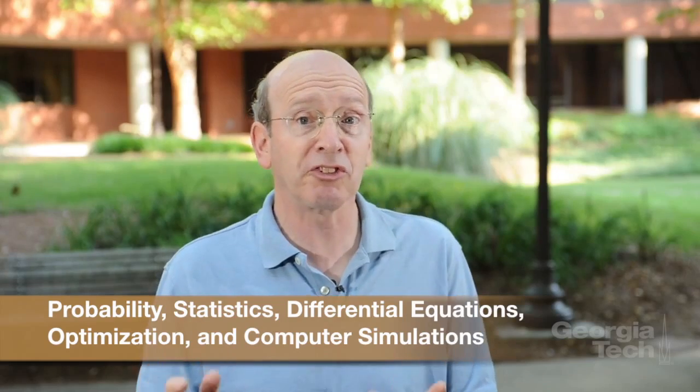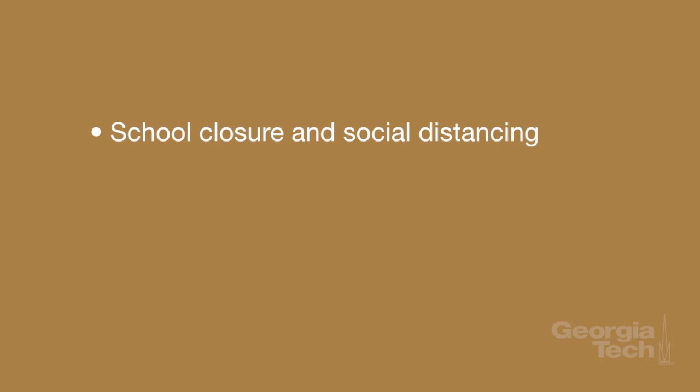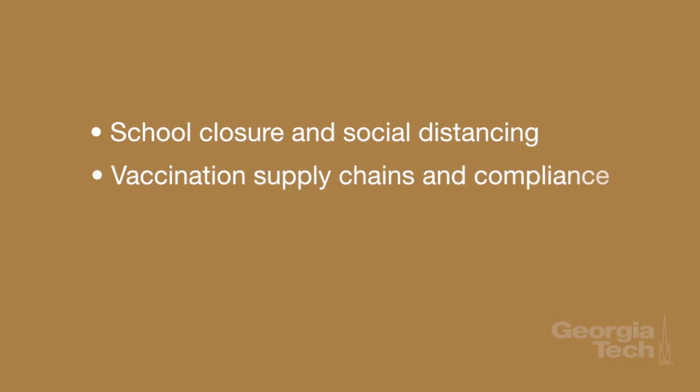So what can be done to stem the march of a pandemic disease through the population? ISyE researchers have used a variety of mathematical tools to model the disease, as well as certain mitigation strategies. These tools include the use of probability, statistics, differential equations, and optimization, which are then used in conjunction with computer simulations to come up with mitigation strategies. What kinds of strategies are out there? School closure and social distancing — keeping people away from each other, especially sick little kids. More reliable vaccination supply chains and compliance. And placement of more effective resources in locations that will allow healthcare officials to respond optimally to a pandemic.